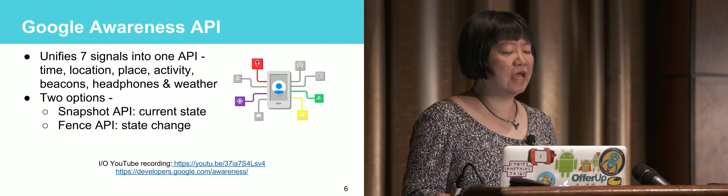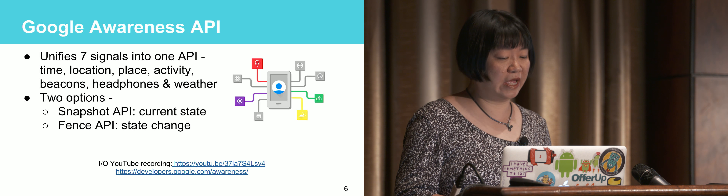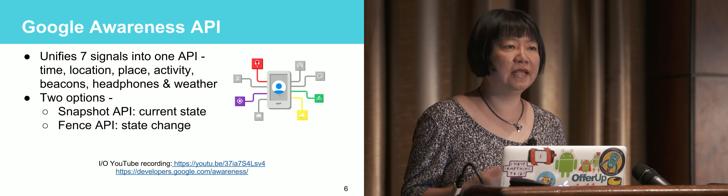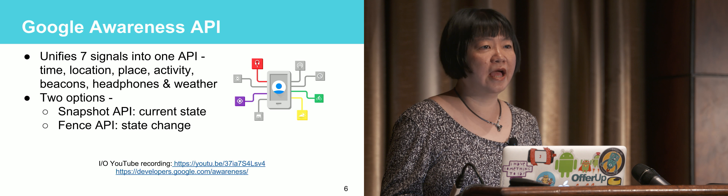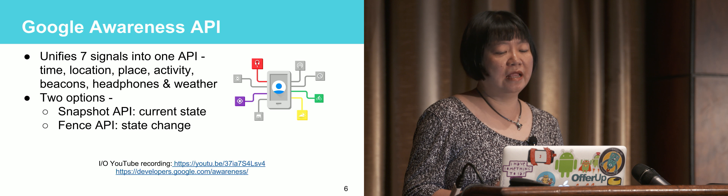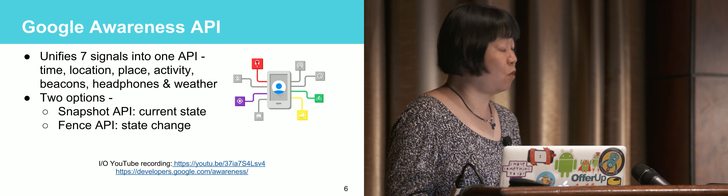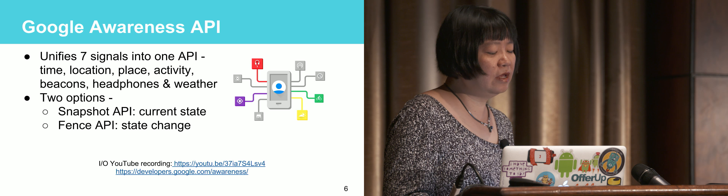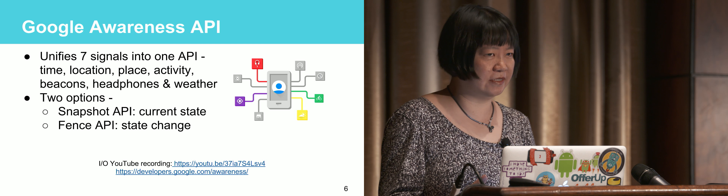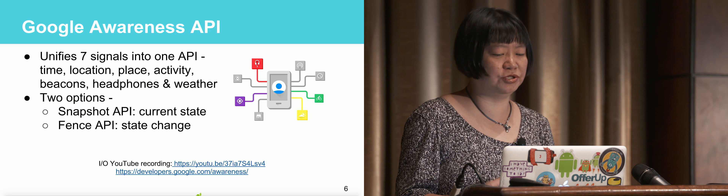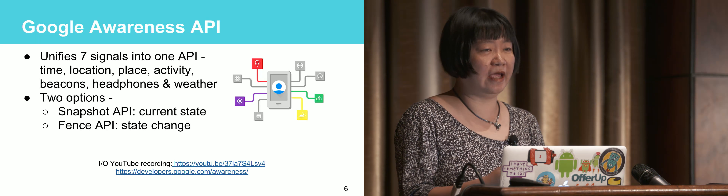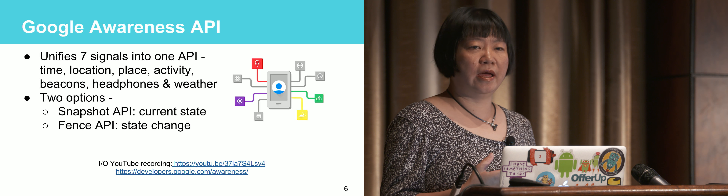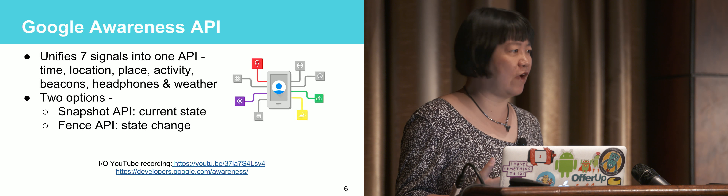Using the Awareness API, you can detect the user's time, location, nearby places, whether the user is running, walking, or biking, the beacons around you, whether your headphones are on or off, and the weather and temperature. The Awareness API gives you two capabilities. One is the snapshot API, which lets you know the current state of all seven signals. The other is a fence API — similar to geofencing, but you can define conditions based on any of those seven signals, and use those conditions to trigger a push notification or any action you define in your program.